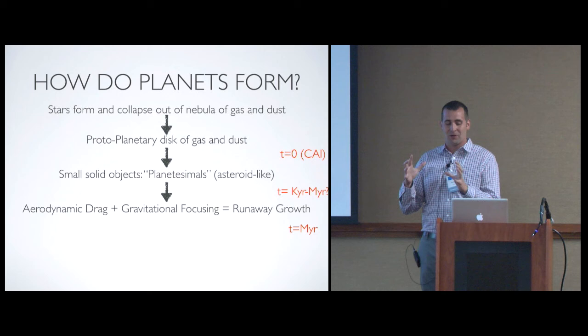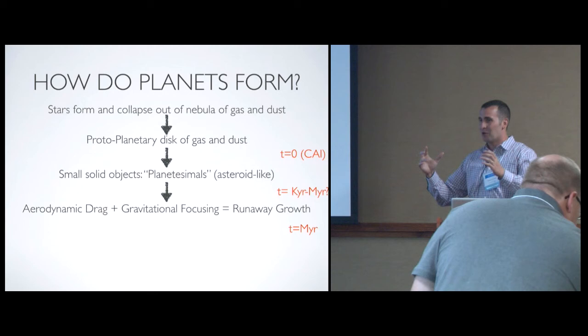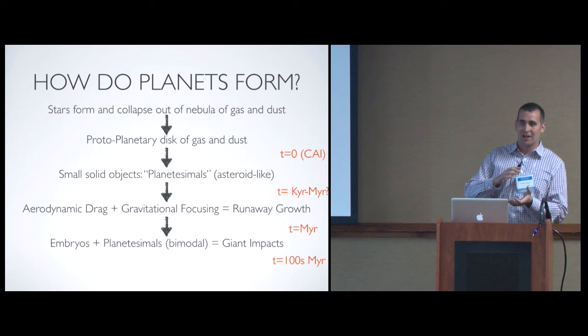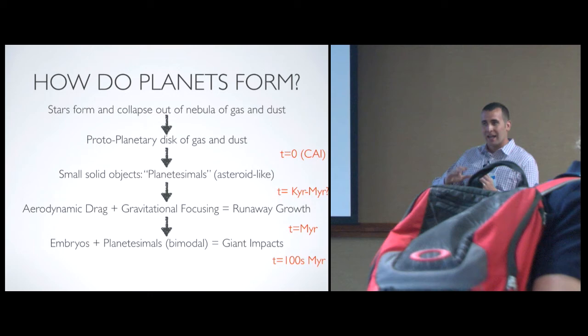Through gravitational focusing and aerodynamic drag in the gas disk, you're going to get some of the planetesimals to grow larger than the other ones, and then they can focus more planetesimals towards themselves. You're going to get runaway growth throughout the disk, and you're basically going to form a bimodal distribution of now larger, by a factor of 10 or more, planet embryos embedded in this sea of asteroid-like planetesimals.